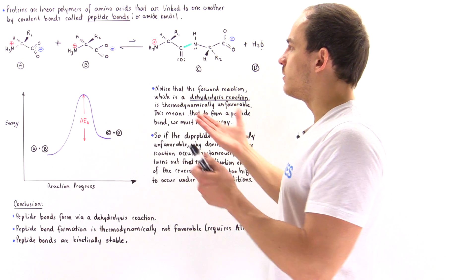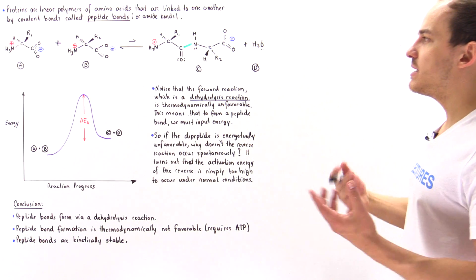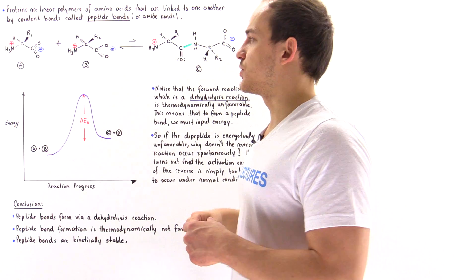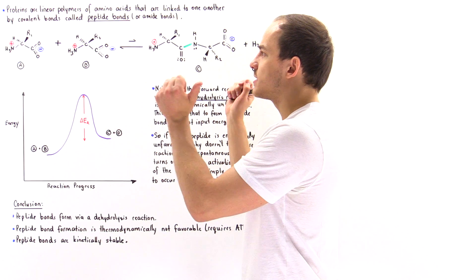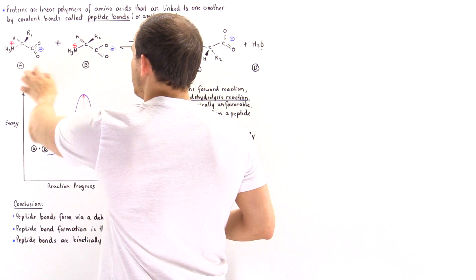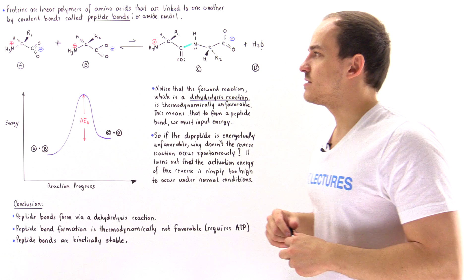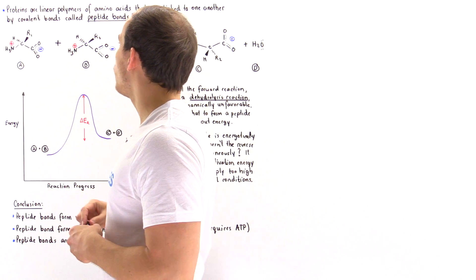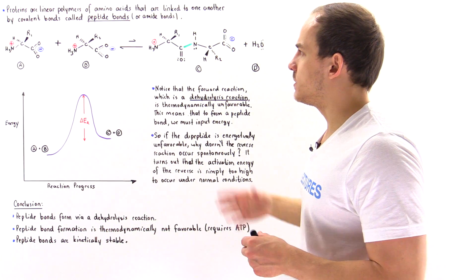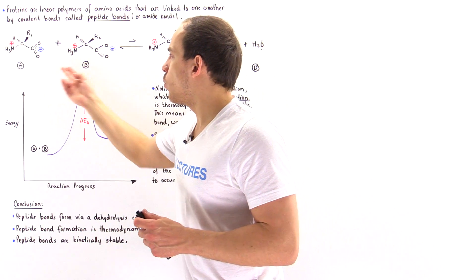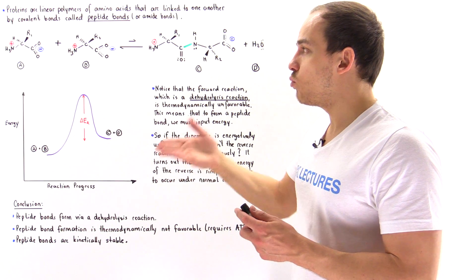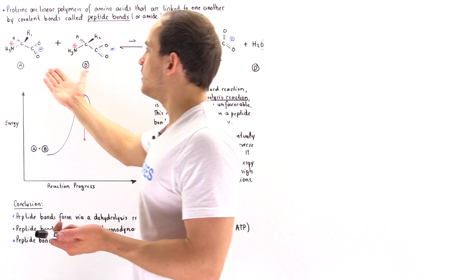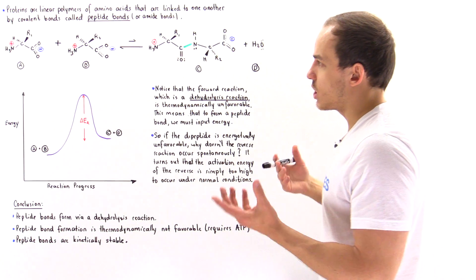Let's begin by taking a look at the following reaction that describes the formation of this peptide bond. On the reactant side we have amino acid A and amino acid B. Amino acid A contains the side chain group R1 and amino acid B contains a different side chain group R2, and any one of these amino acids can be any one of the 20 amino acids found inside our body — for example, glycine and lysine.